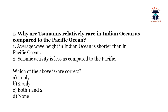First question: Why are tsunamis relatively rare in the Indian Ocean as compared to the Pacific Ocean? Option 1: Average wave height in the Indian Ocean is shorter than in the Pacific Ocean. Option 2: Seismic activity is less as compared to the Pacific. The answer is second only — Option B. Average wave height has nothing to do with tsunamis; it is seismic activity which results in tsunamis.